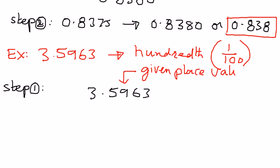Now that we have identified the given place value, we want to look at the number just to the right of it and make a decision. 6 is greater than 5. Since 6 is greater than 5, we increase the number 9 by 1 and drop all the digits to the right of 9.